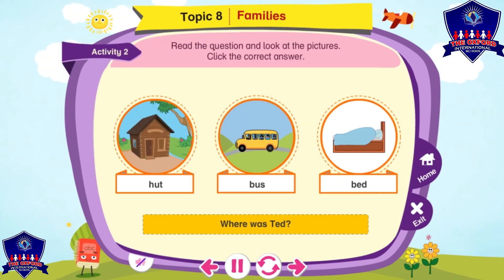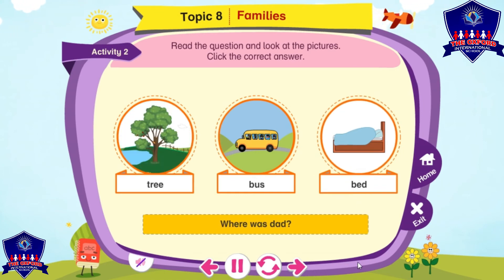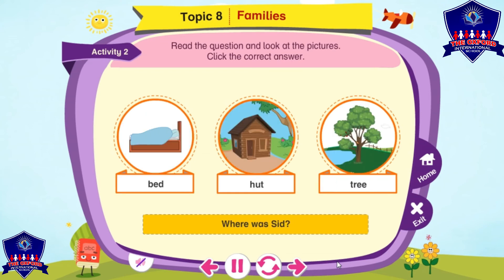Activity 2. Read the question and look at the picture. Click the correct answer. Where was dad? Dad was in the bed. Where was dad? Dad was on the bus. Who was in the hut? Mom was in the hut. Where was Sid? Sid was in the tree.